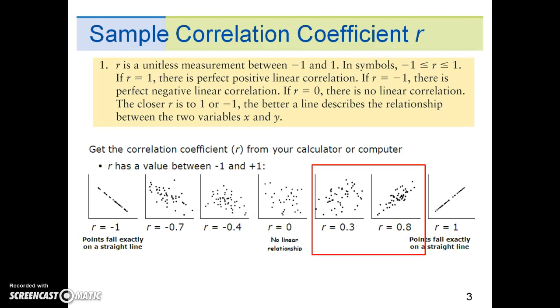Where 0.3 is a low correlation, 0.8 is a high positive correlation.